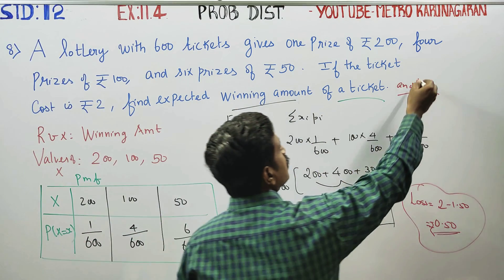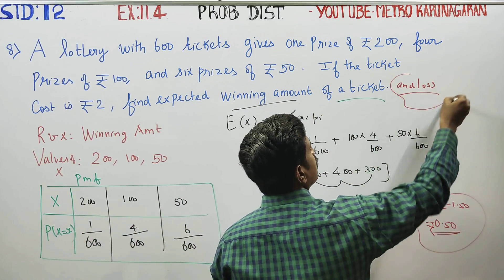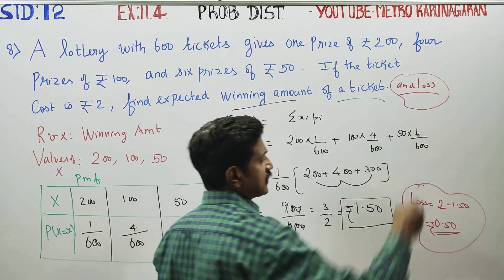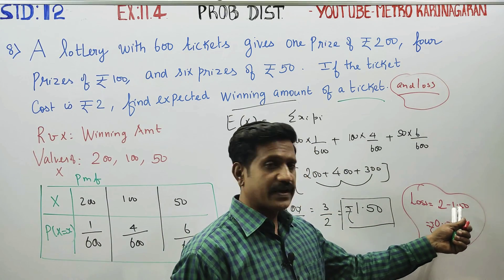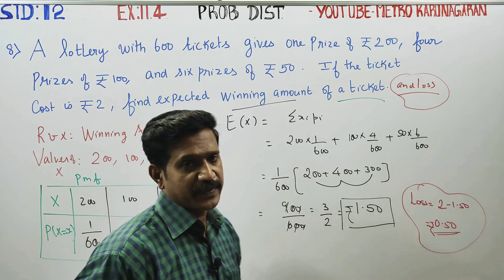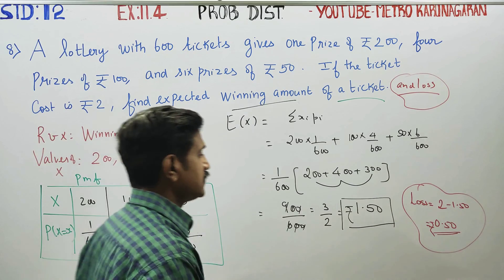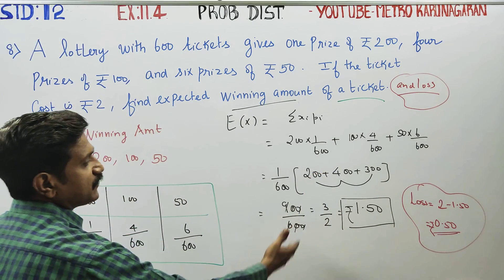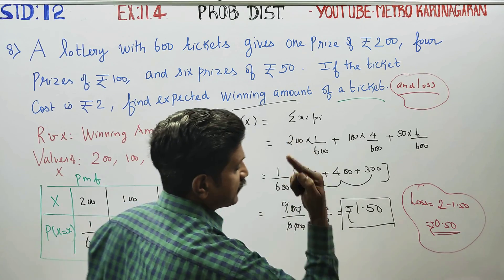Since the ticket costs Rs.2 and expected winning is Rs.1.50, the loss is equal to 2 − 1.50 = Rs.0.50. This is the expected win for a single ticket.